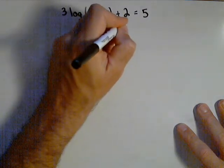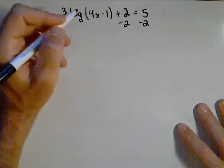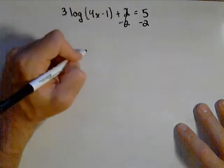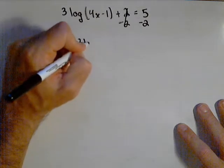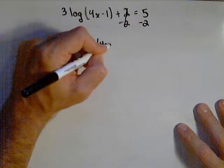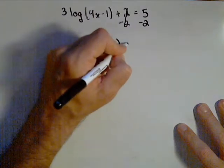To do that, first we're going to subtract 2 from both sides. That cancels out there, and so we have 3 log(4x - 1) equals 3.